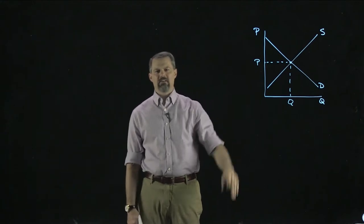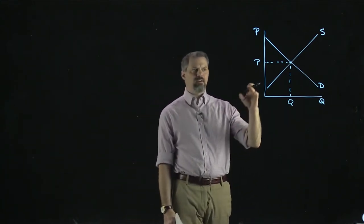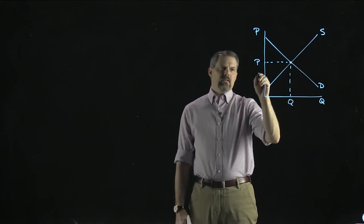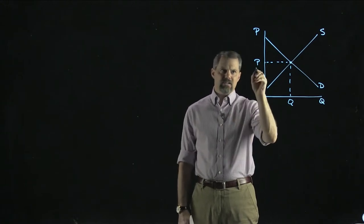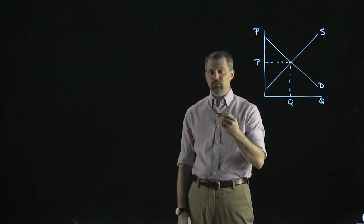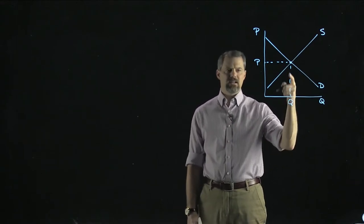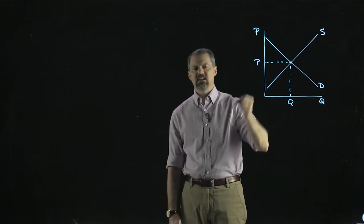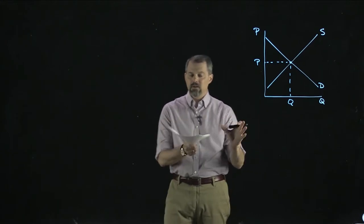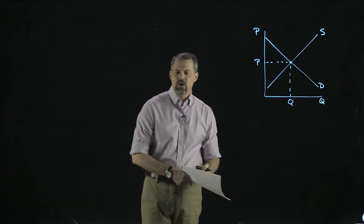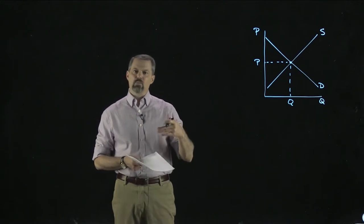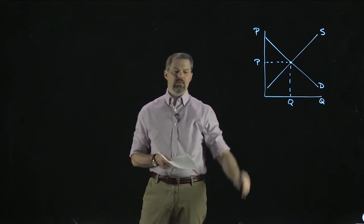That's how we identify the equilibrium. But if we're talking about two functions that cross each other, what that means is that at that point the two functions are equal to each other. If we take a P and plug it into both the demand and supply curves, we get the same Q out. Or if we take a Q and plug it into both curves, we get the same P out. So we can simply set the inverse demand and inverse supply equal to each other, and out of that will come the equilibrium price and quantity.